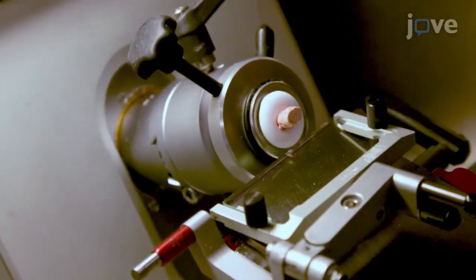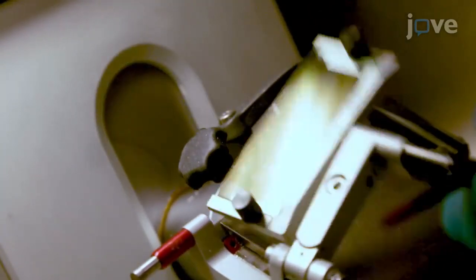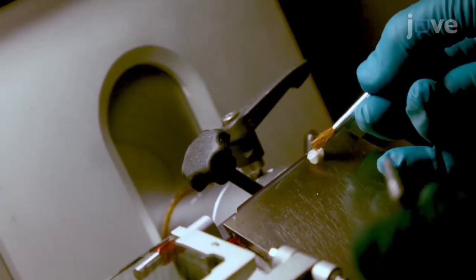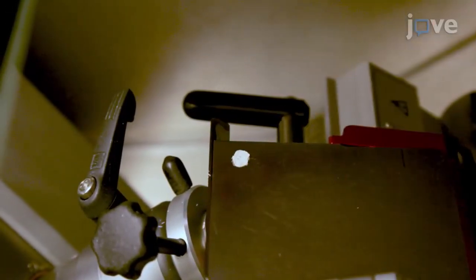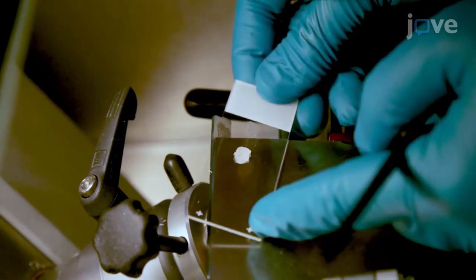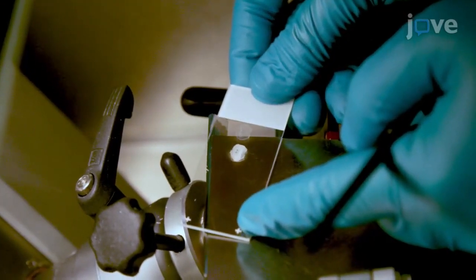Cut the tissue with the guidance of a stereotaxic atlas in sections of desired thickness and unfold the section with a small brush if necessary. Thaw-mount the section onto a microscope slide.